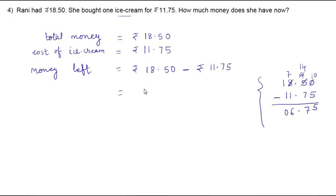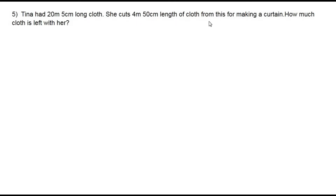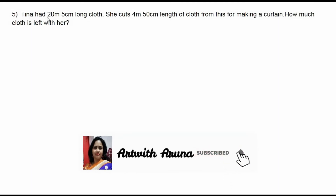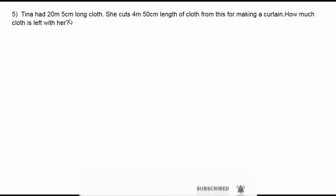So the answer is 6 rupees 75 paisa. The amount left with Rani is rupees 6.75. The 5th question is: Tina had 20 meter 5 centimeter long cloth. She cuts 4 meter 50 centimeter length of cloth from this for making a curtain. How much cloth is left with her? According to the question, initially Tina had 20 meter 5 centimeter of cloth, and she used 4 meter 50 centimeter for making a curtain.